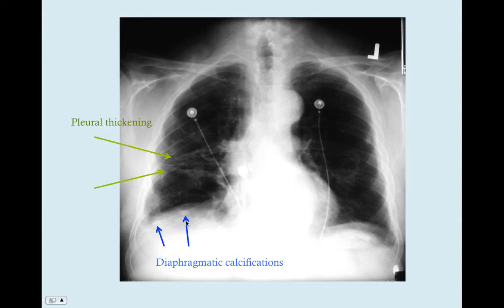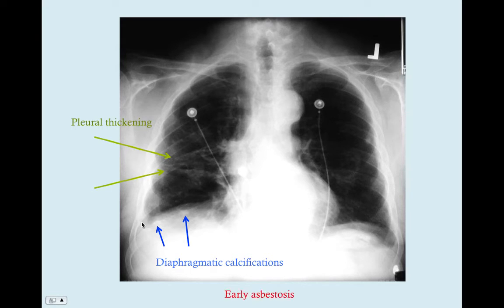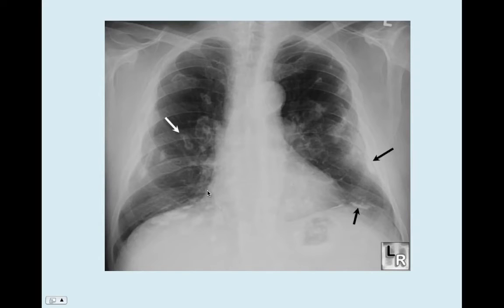Looking at the base of the lung at the diaphragm, you can see these little calcifications — two or maybe three of them. Sometimes you can also see them on the chest wall. This is early asbestosis. We also have diaphragmatic calcifications on both sides, and possibly another one here.